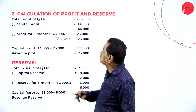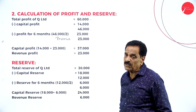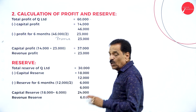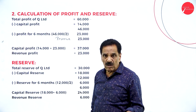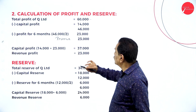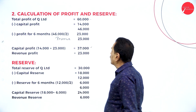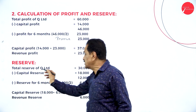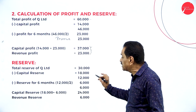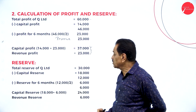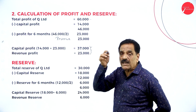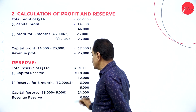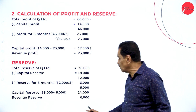To explain once more: total profit as per the balance sheet is 60,000. Profit available at the time of acquisition is called capital profit — that is 14,000. Balance is 46,000. Acquired on 1st July means after 6 months, so out of 46,000, half (23,000) becomes revenue profit and 23,000 becomes additional capital profit. Total capital profit: 14,000 plus 23,000 equals 37,000. Revenue profit is 23,000. For reserves: total reserve of Q-Limited is 30,000 minus capital reserve of 18,000 equals 12,000. Acquired after 6 months, so 6,000 is capital reserve and 6,000 is revenue reserve. Total capital reserve: 18,000 plus 6,000 equals 24,000. Revenue reserve is 6,000.